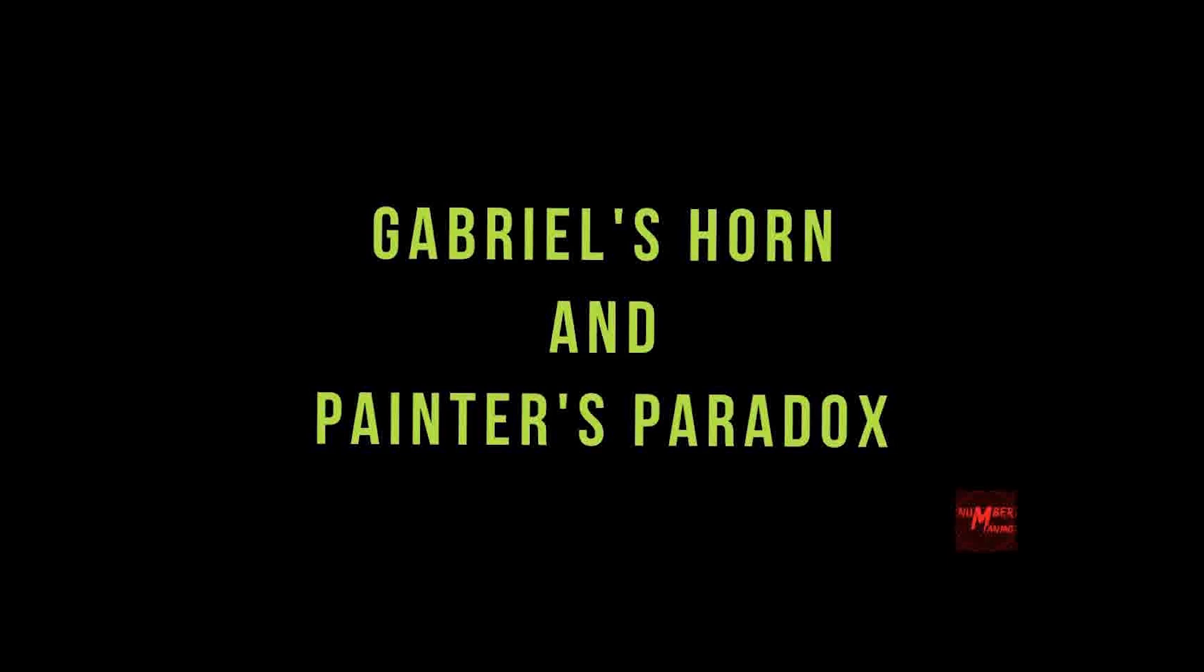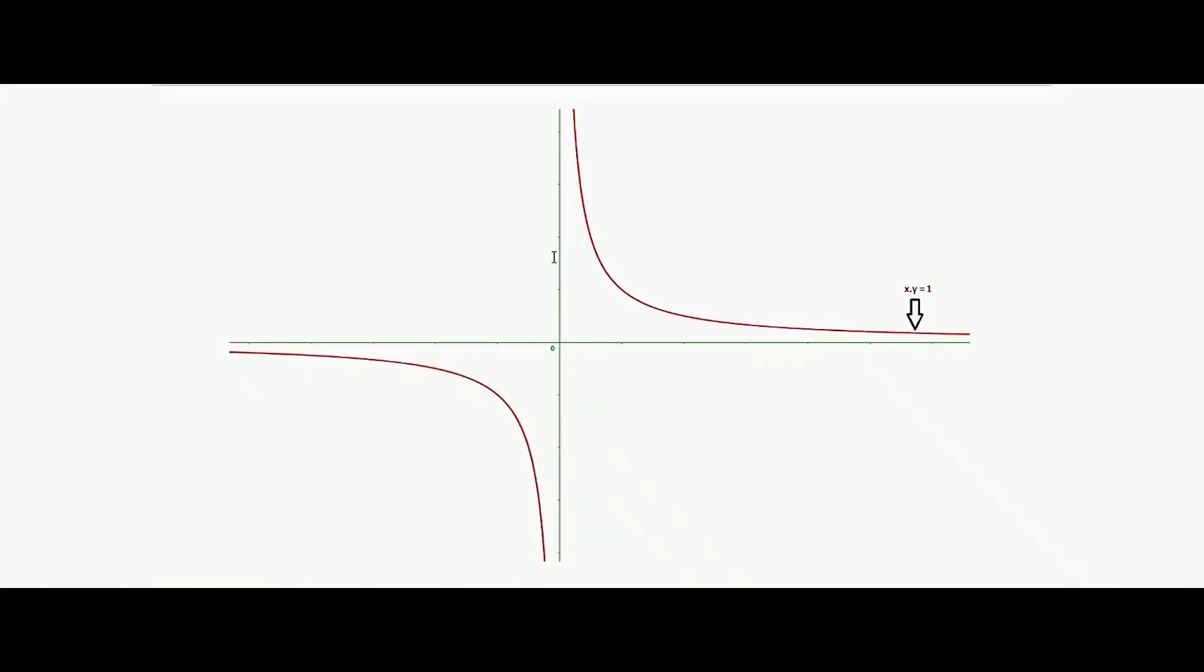So coming to what the Gabriel's horn looks like. We first consider the graph of xy equal to 1 which looks something like this. And then we only consider the part of the graph with the value of x greater than 1. So this line right here is x equal to 1. Now we don't need the remaining part of the graph.